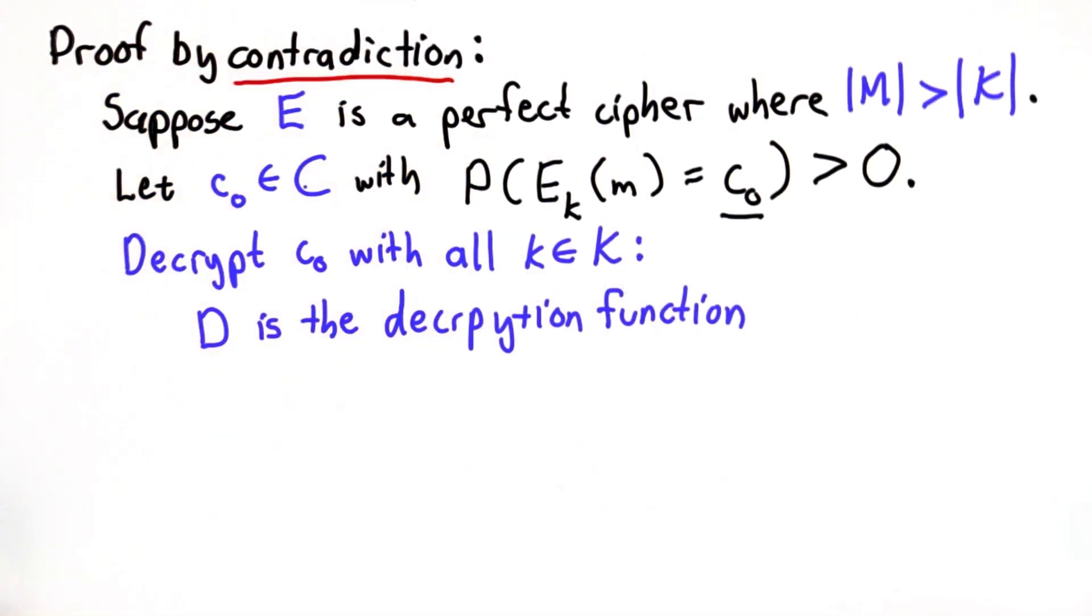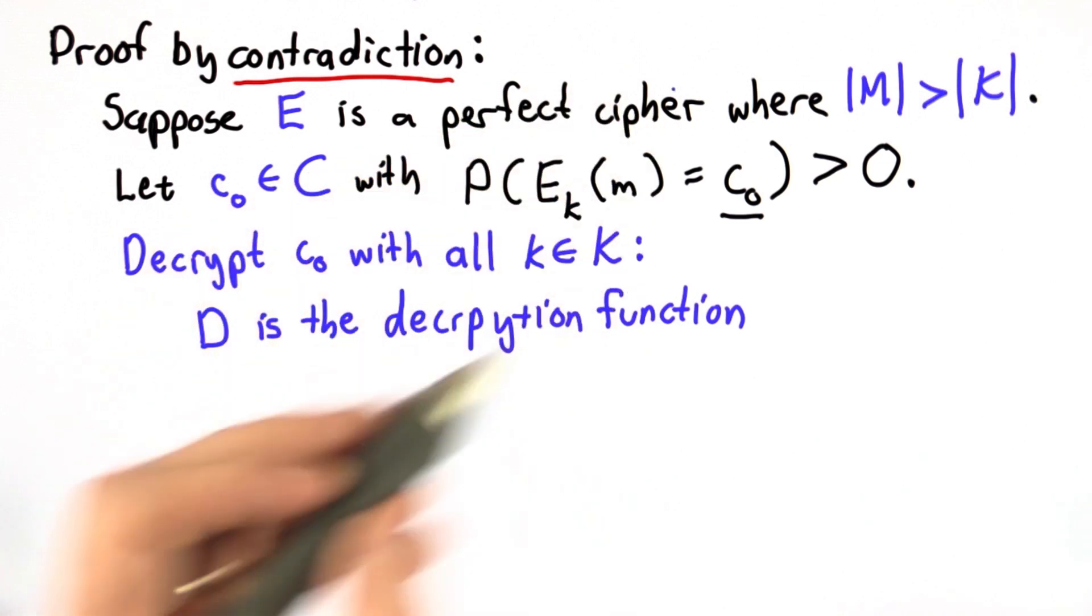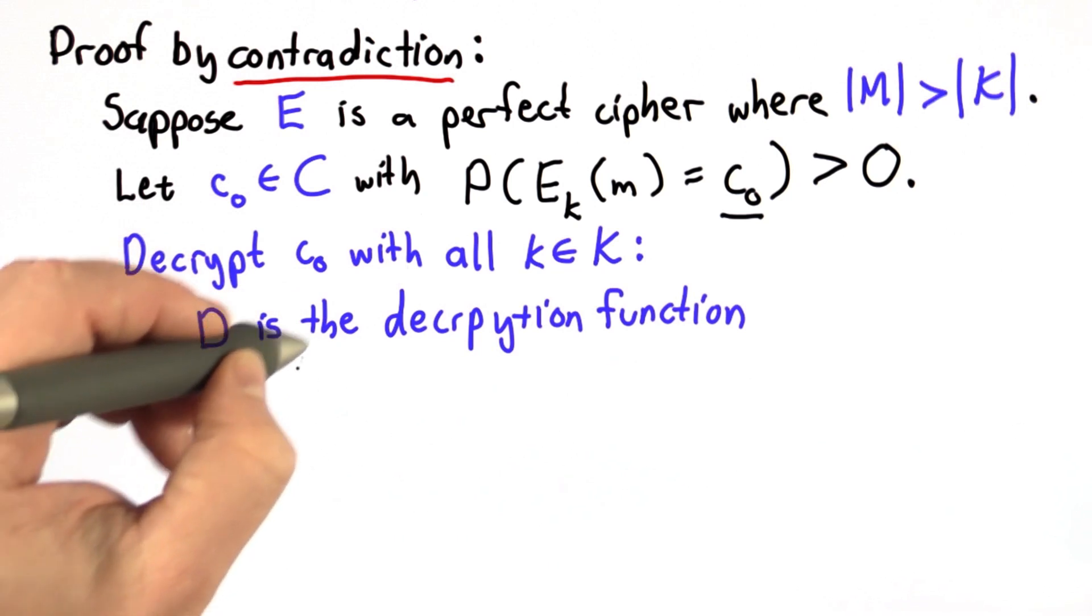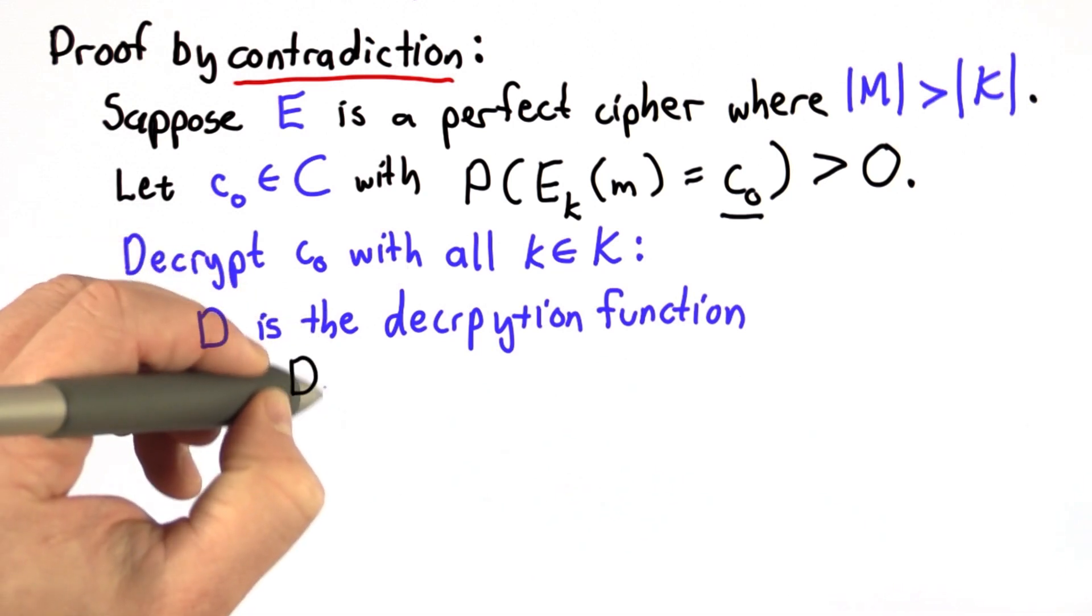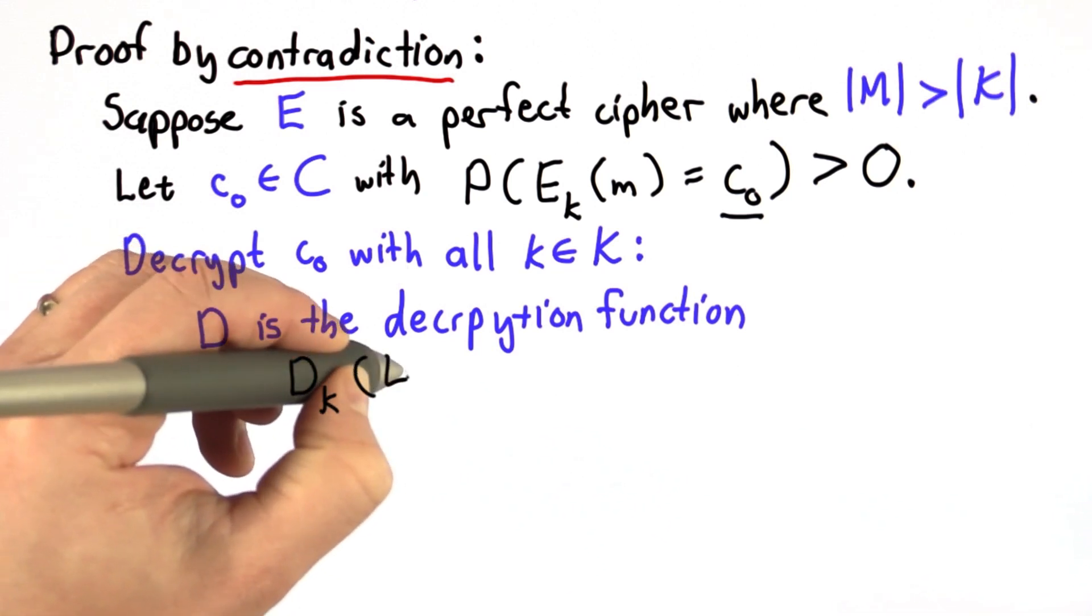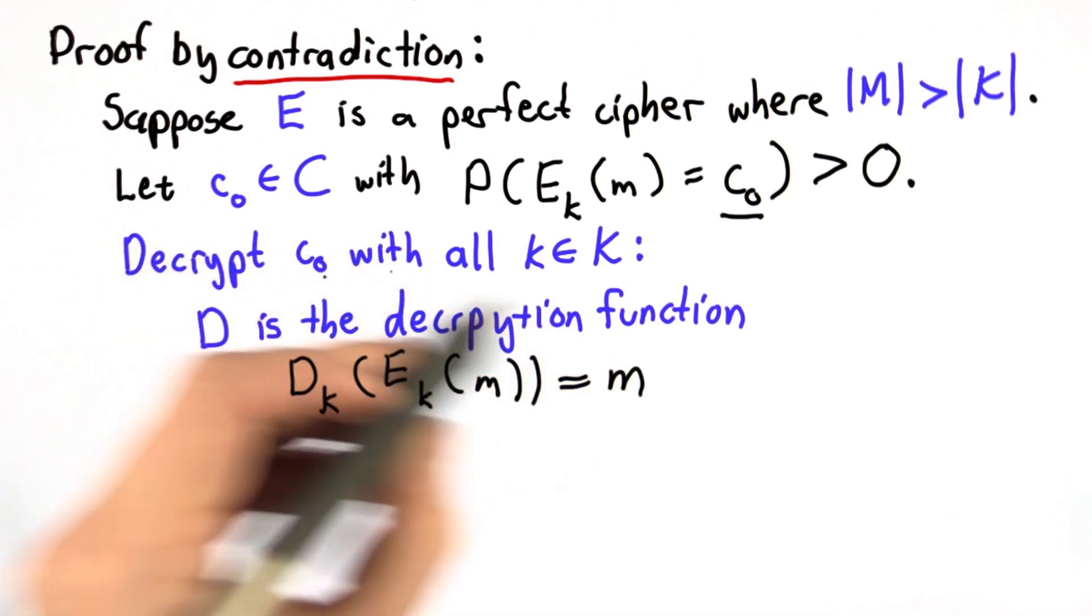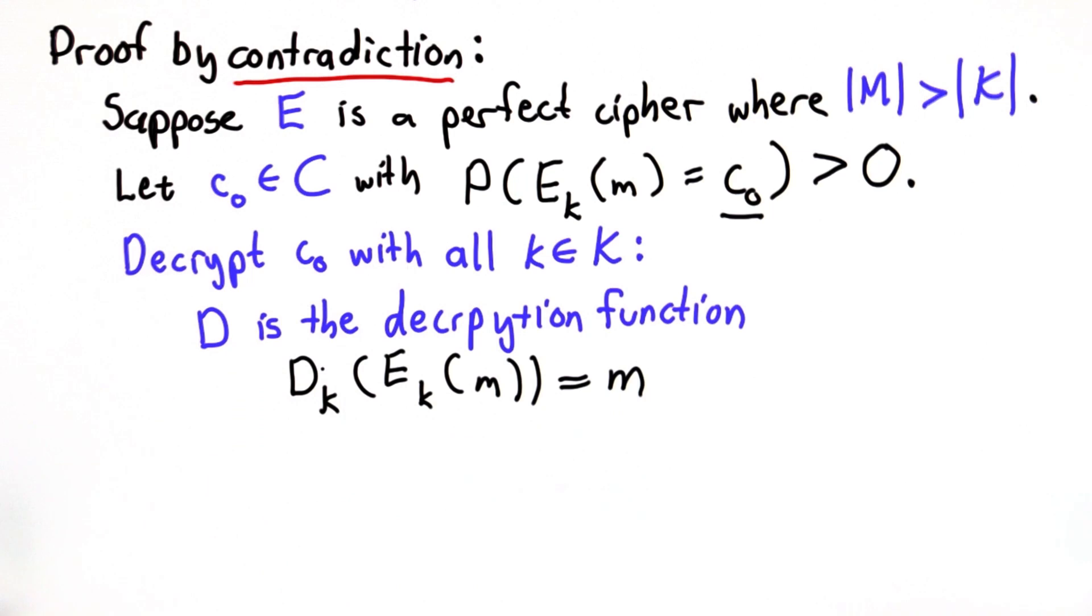Now since our cipher is correct, in order to be perfect it has to both be correct and perfectly secure. That means the decryption function must have the property that if we decrypt a message encrypted with the same key, we always get the same message out. So we don't need to know anything else about the decryption function than that. And we shouldn't assume anything because all we're trying to do is show that there is no possible choice for E that is both a correct encryption function and a perfect cipher.